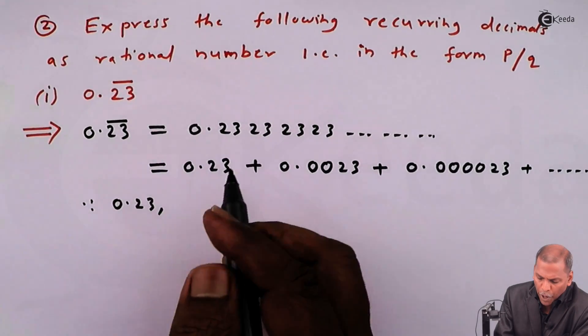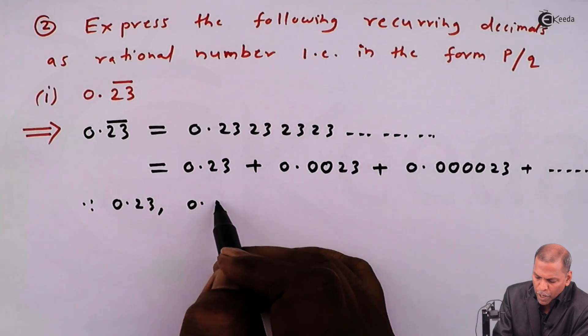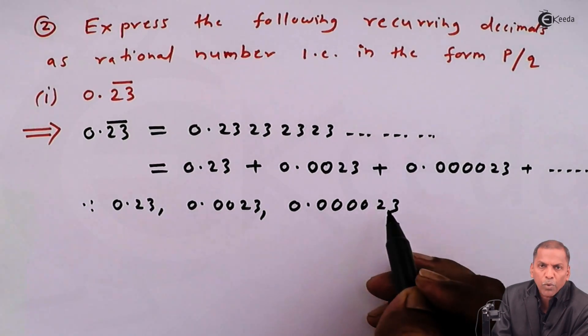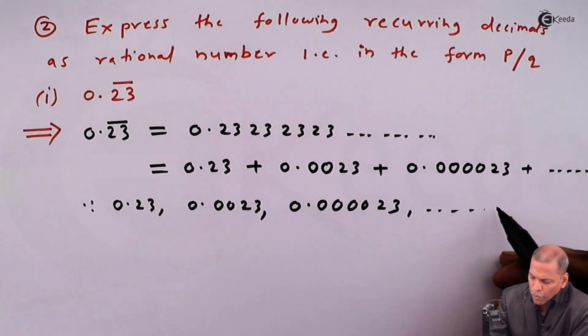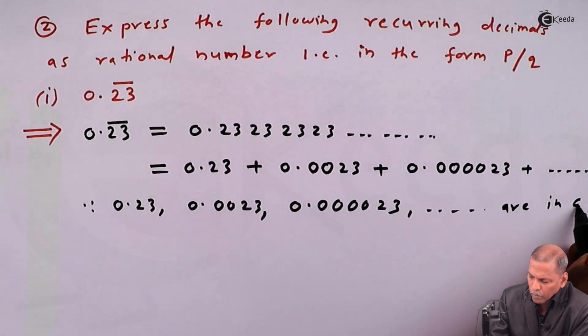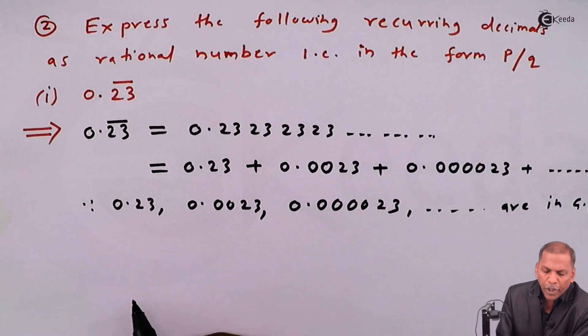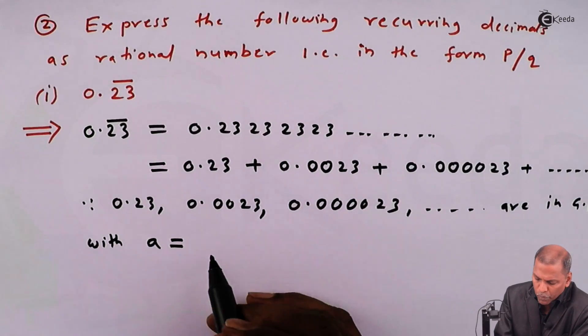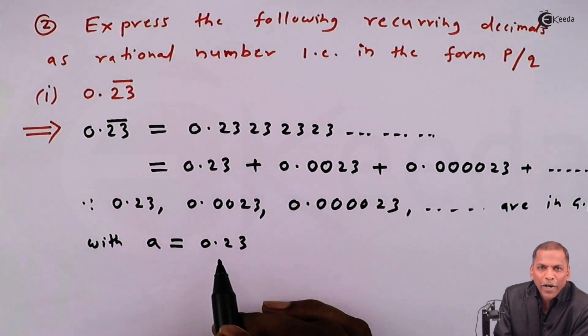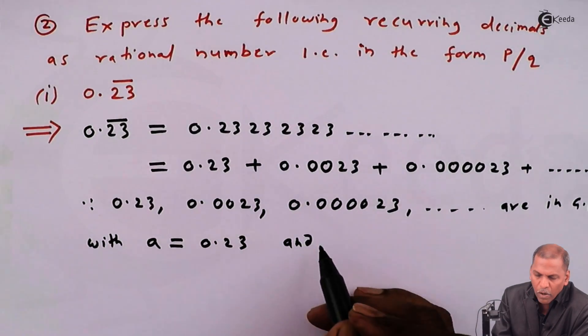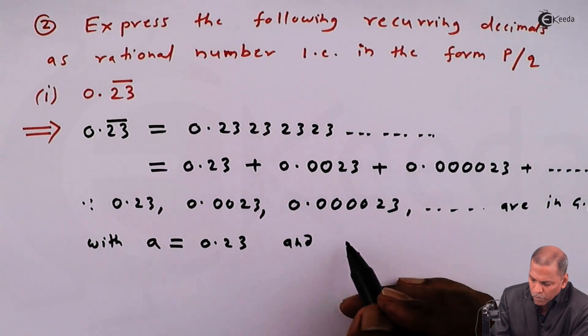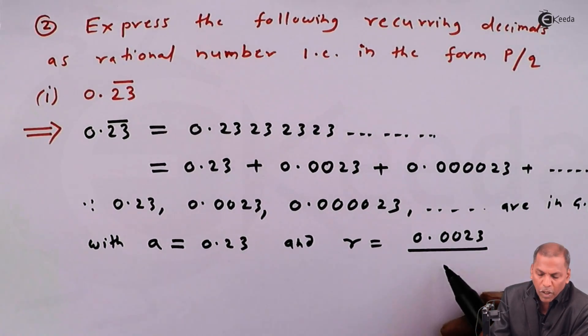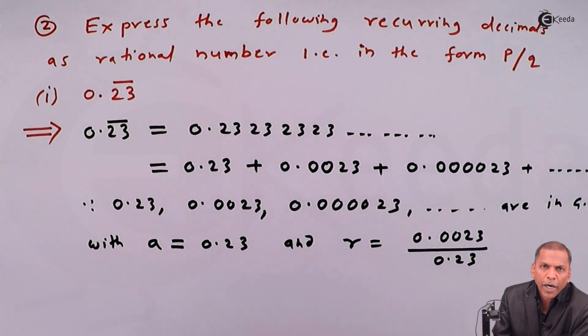Since 0.23, 0.0023, 0.000023, going on are in GP with first term a equal to 0.23 and common ratio r equal to 0.0023 divided by 0.23.